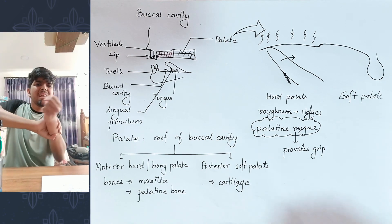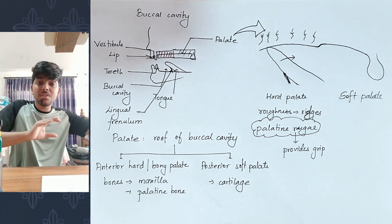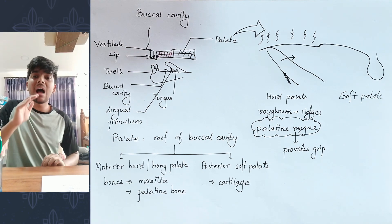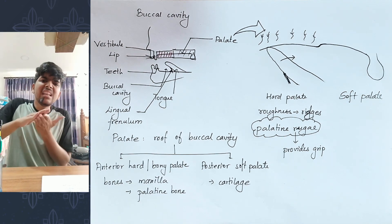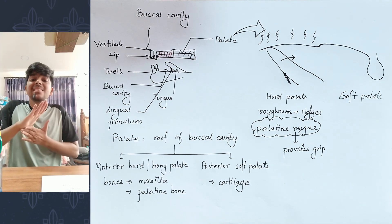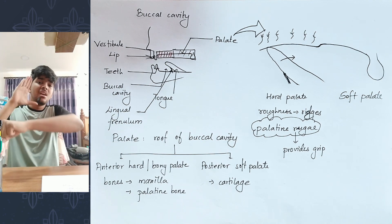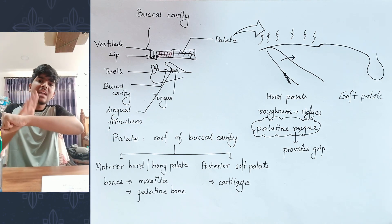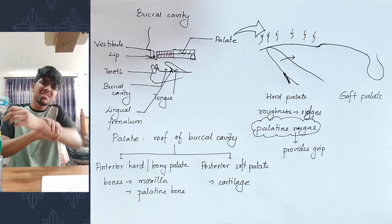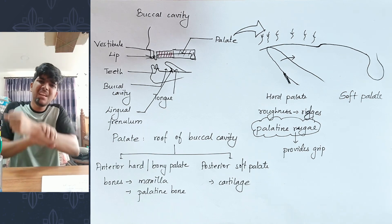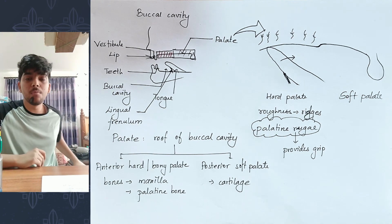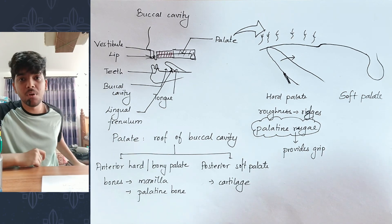The hard palate is very rough and provides high friction. That is why a tiger can grip a deer and the prey cannot escape due to the friction provided by the rugae. The hard palate is rough for this reason.